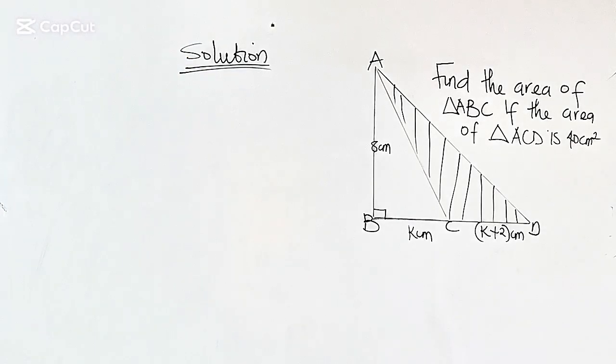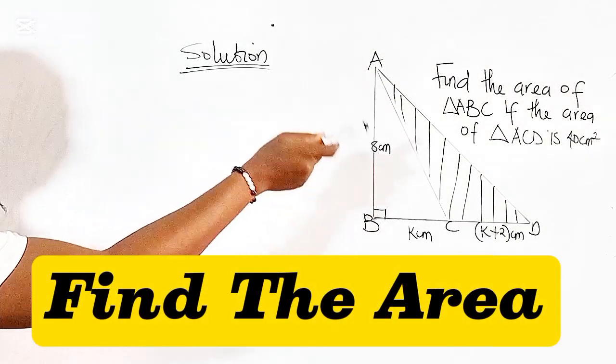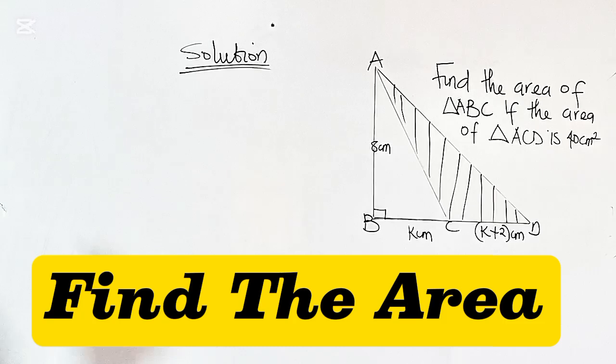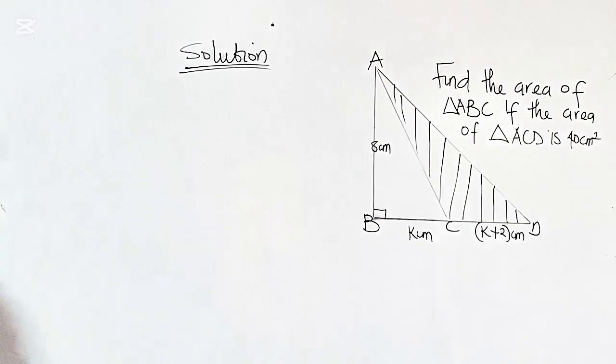Hello and welcome to What Easy? In this video, we are required to calculate the area of triangle ABC, that is the unshaded portion in this diagram. Given that the shaded region, triangle ACD, has an area of 40 cm squared.